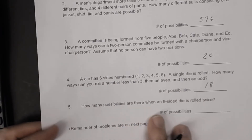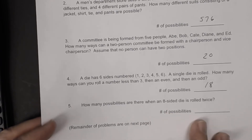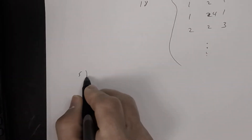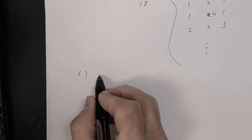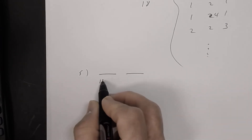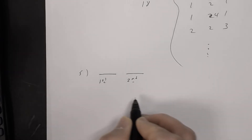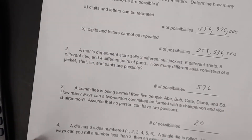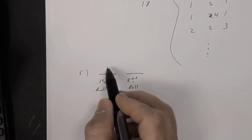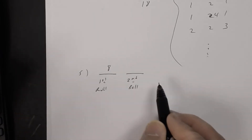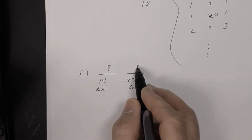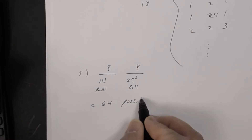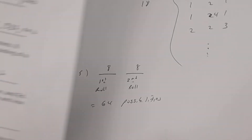Number 5: an eight-sided die is rolled twice. The first roll has 8 possibilities and the second roll also has 8 possibilities. By the fundamental counting principle, there are 8 × 8 = 64 possibilities.